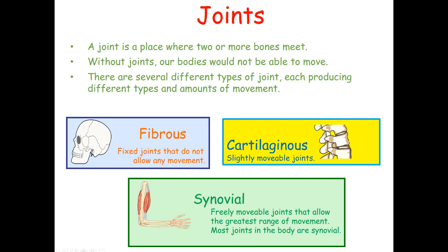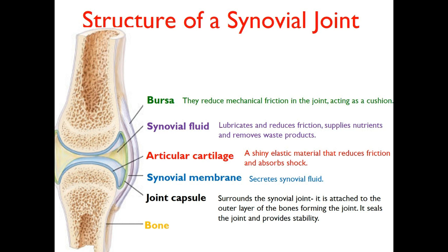For a joint to be a synovial joint, it has a few characteristics. If we break up the structure of the synovial joint into smaller parts: first is the bursa, which is an area that reduces mechanical friction in the joint and acts as a bit of a cushion. Without the bursa, there's going to be more friction in the joint and therefore it won't move as easily.